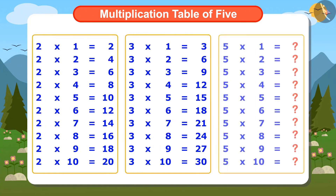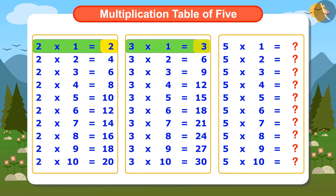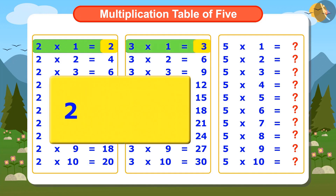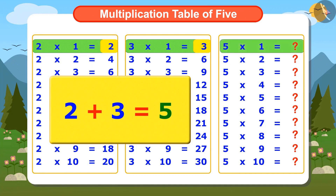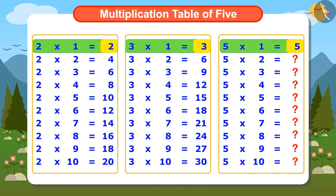Wait, first I will write the multiplication table of 5 as well — it will be easy to check if you are writing it correctly. See, 2 multiplied by 1 is 2 and 3 multiplied by 1 is 3. Add 2 and 3, the answer is 5. So we write 5 multiplied by 1 is 5.